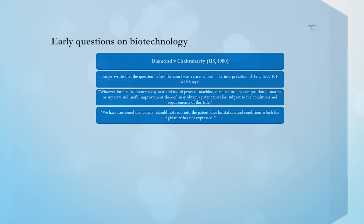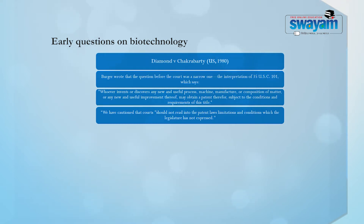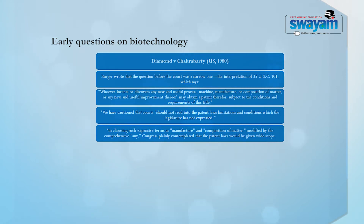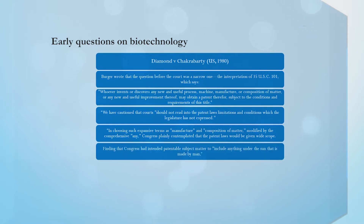The court said we have been cautioned that we should not read into patent laws limitations and conditions which the legislature has not expressed. In choosing such expansive terms as manufacture, composition of matter, modified with the comprehensive 'any', the court said Congress plainly contemplated that patent laws should be given wider scope. In fact, the court went on to make a finding that Congress has intended patent subject matter to include anything under the sun that is made by man.